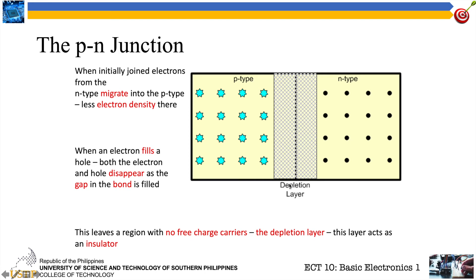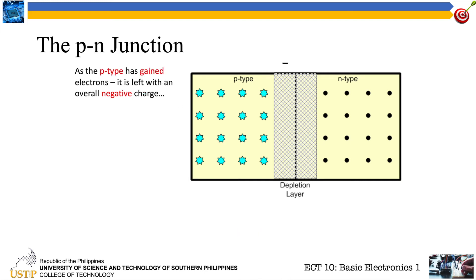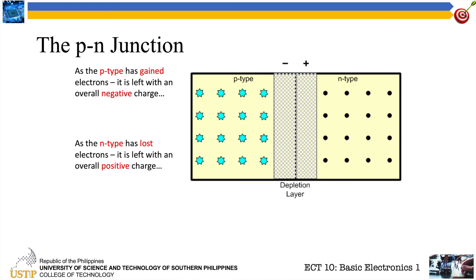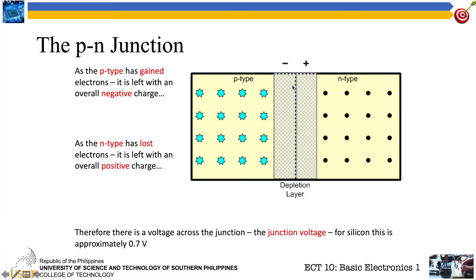This gap where there are no free charge carriers is called the depletion layer, and it acts as an insulator — it does not permit the flow of electrons. The p-type has gained electrons and is left with an overall negative charge, while the n-type has lost an electron and is left with an overall positive charge. Therefore, there is a voltage across the junction. The junction voltage for silicon is approximately 0.7 volts.